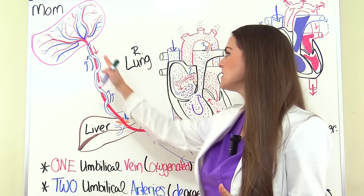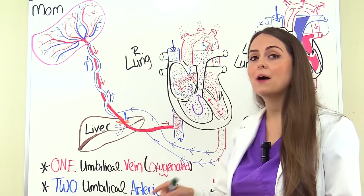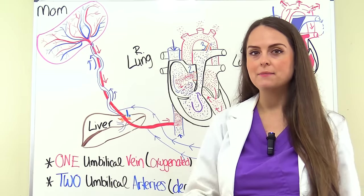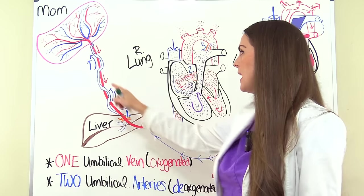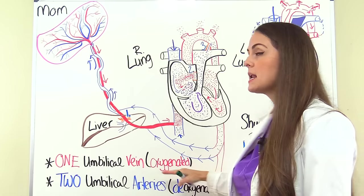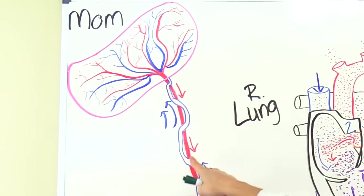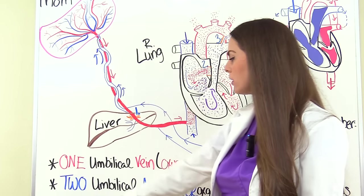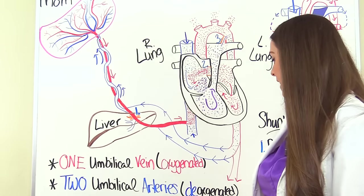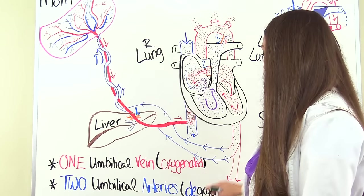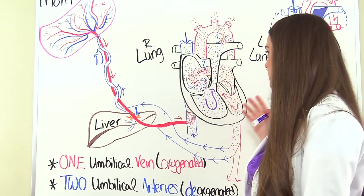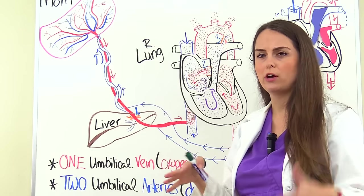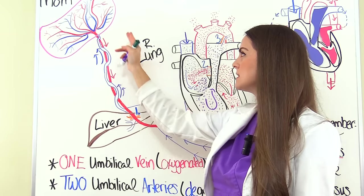For exams, you want to know about the umbilical cord — specifically the umbilical vein and the umbilical arteries: how many there are and what type of blood they carry. There is only one umbilical vein, and it carries oxygenated blood away from the placenta to the baby — illustrated in red with arrows going toward the baby. There are two umbilical arteries, and they carry deoxygenated blood — represented in blue — back to the placenta, so the blood can be re-oxygenated and waste removed.